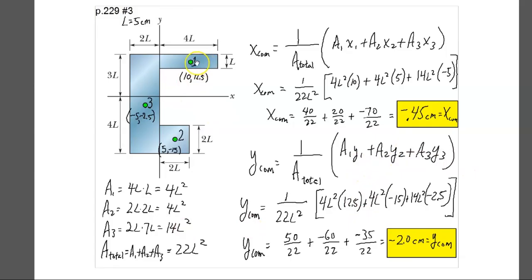So here we see that this centerpiece is 12.5 in the Y direction. This one is negative 2.5 in the Y direction. And this one here is negative 15 in the Y direction. There are my Y values. And once again, the L squareds cancel out, and I'm left with my value for the Y coordinate of the center of mass negative 2.